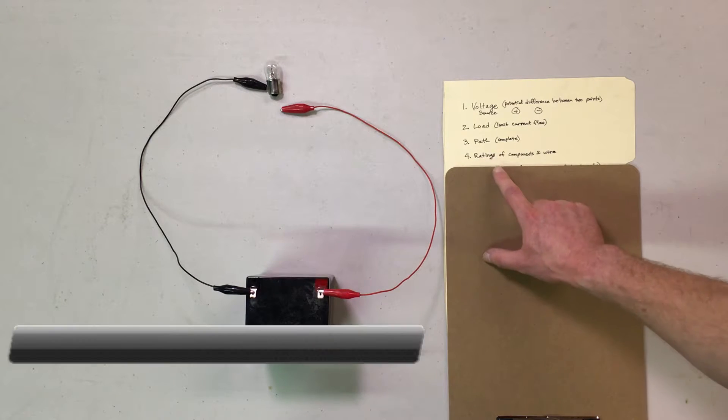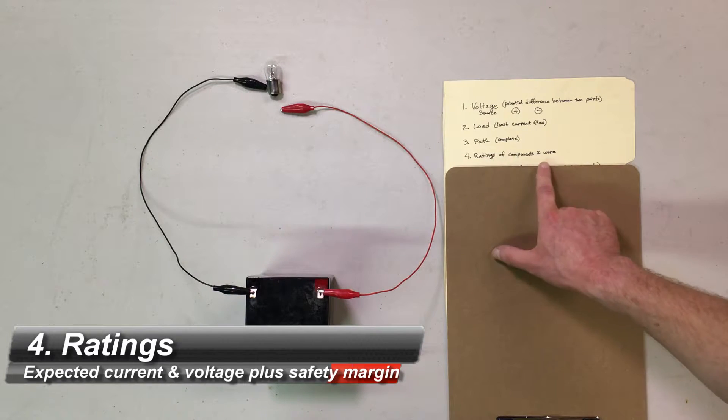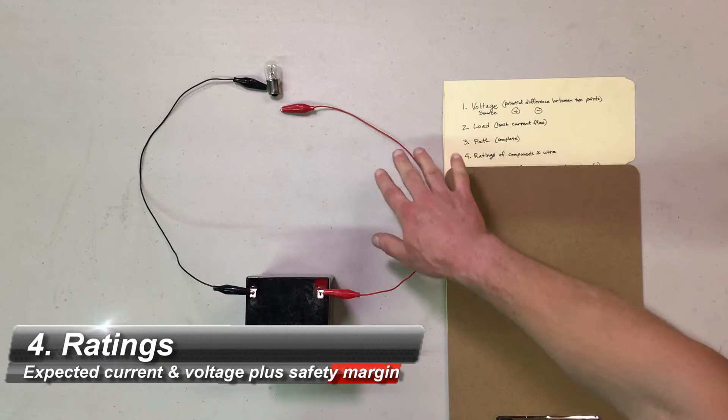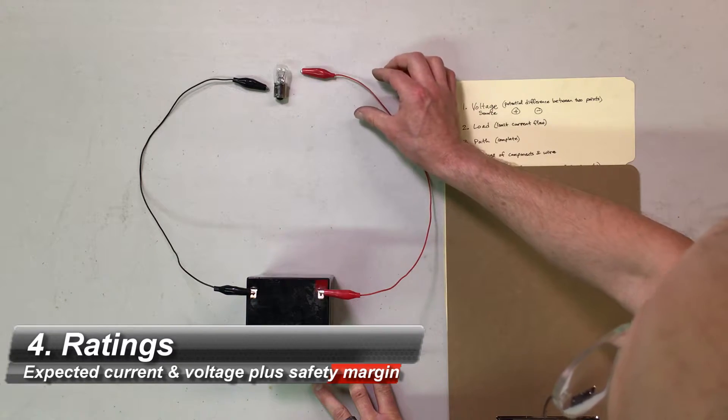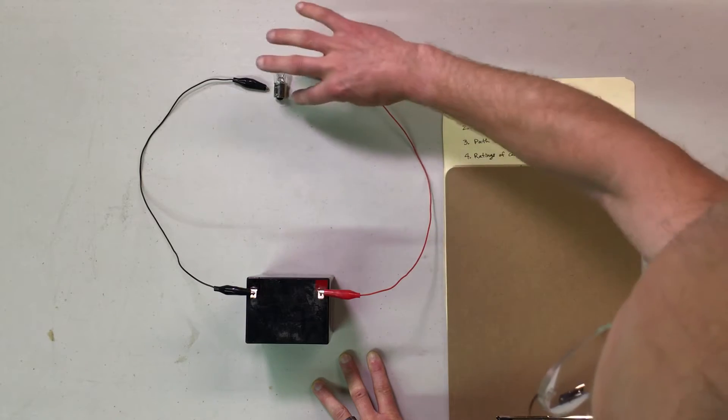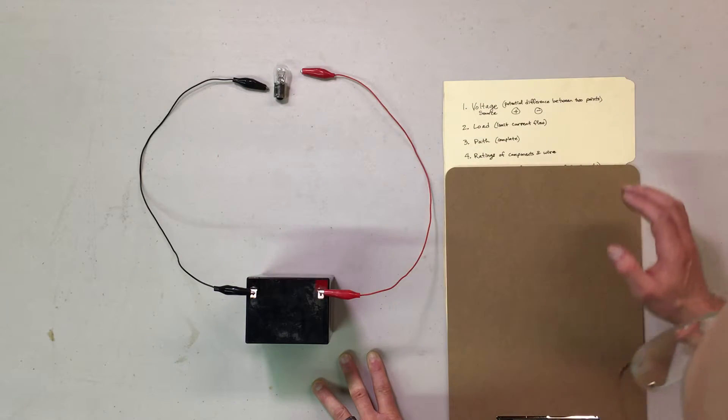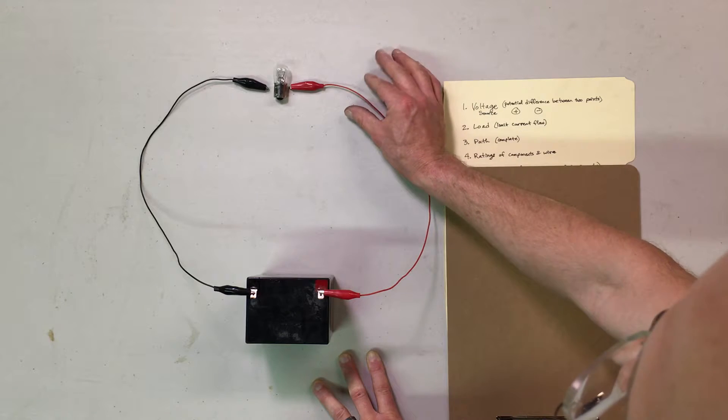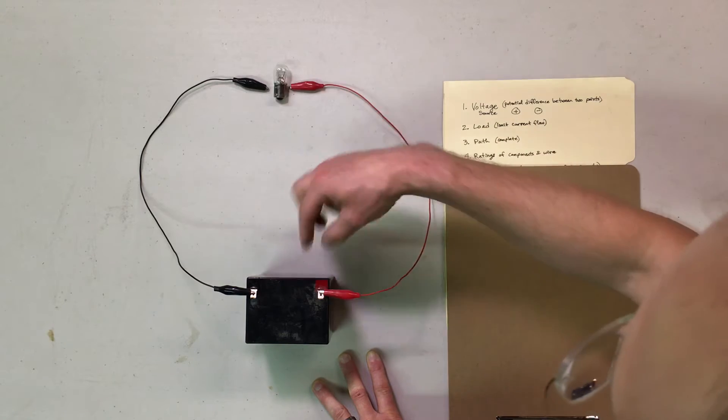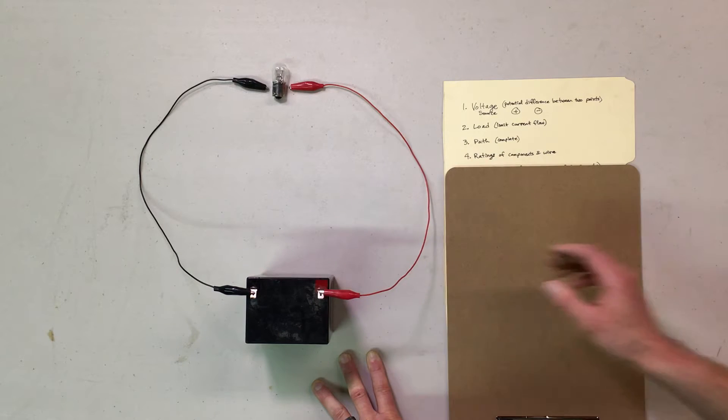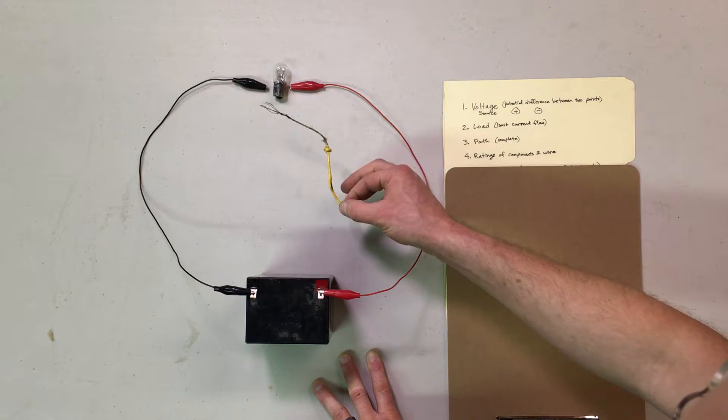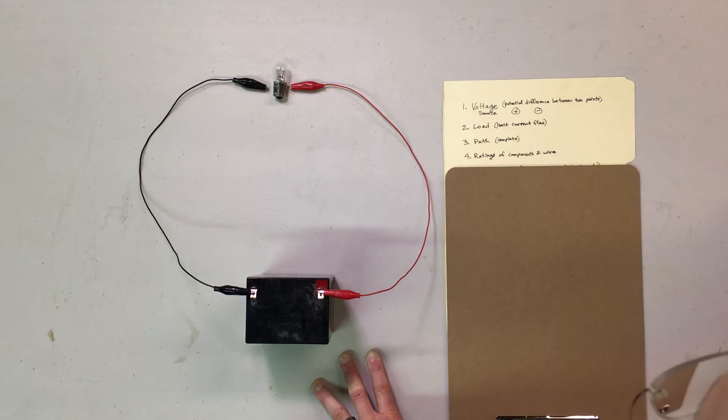The fourth thing you need is to match the ratings of your components and your wire. The wire needs to be sized appropriately so it's thick enough for the amount of flow, current flow that you're going to have running through the circuit. In other words, if the wire is too small for the current that you're flowing based on the load you have and the voltage source that you're providing, you will end up frying the wire because it will not be able to carry that much current.